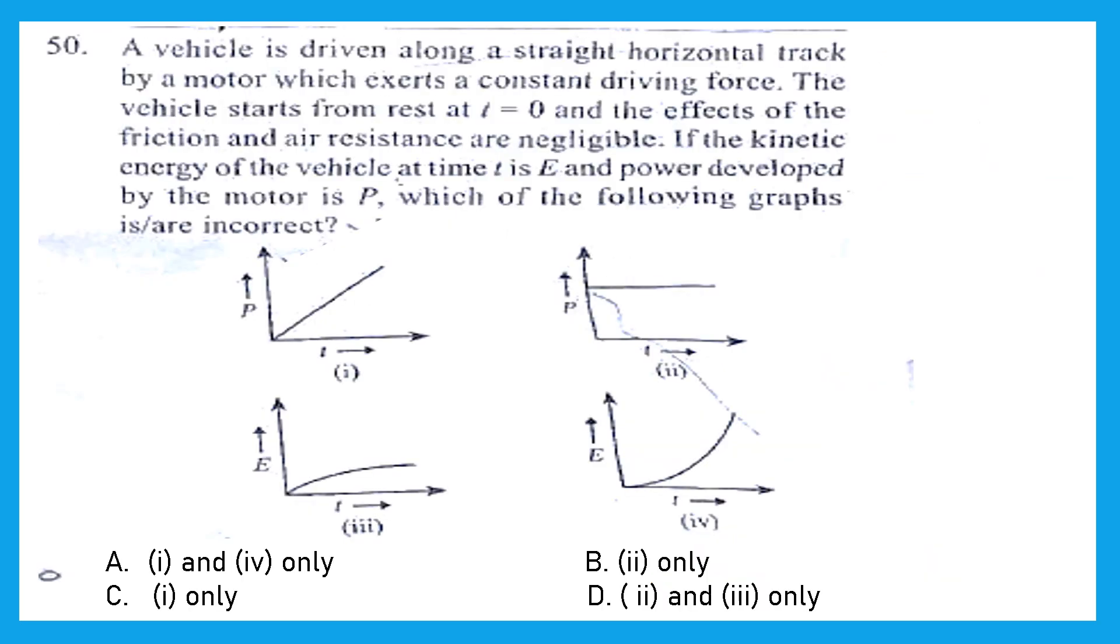Question 50, a vehicle is driven along a straight horizontal track by a motor which exerts a constant driving force. The vehicle starts from rest at T equal to 0 and the effects of the friction and air resistance are negligible. If the kinetic energy of the vehicle at time T is E and power developed by the motor is P, which of the following graphs is incorrect?